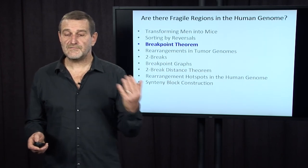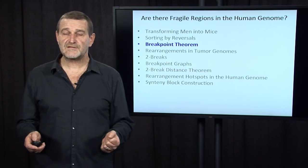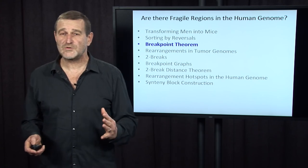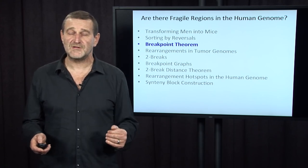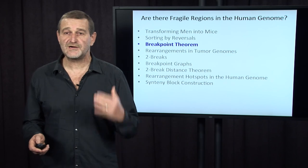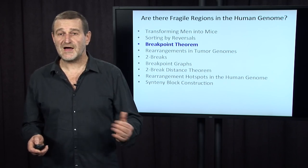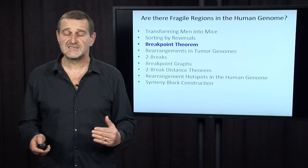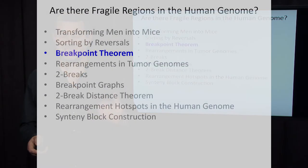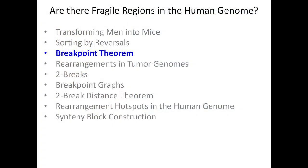And after we looked at the greedy algorithm for sorting by reversal, you may notice that, of course, it's not optimal. It used 11 reversals to transform mouse into human permutations. But we know from the first slide in this lecture that it can be done in just seven reversals. So maybe we should come up with a better algorithm. And to do this, we will have to define the notion of breakpoint graph.